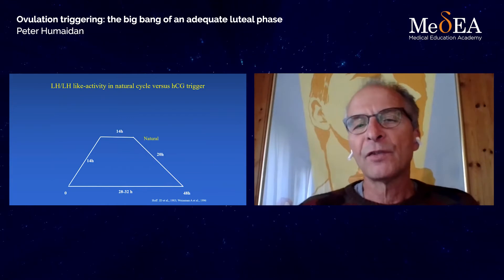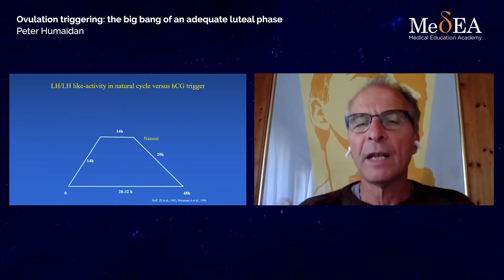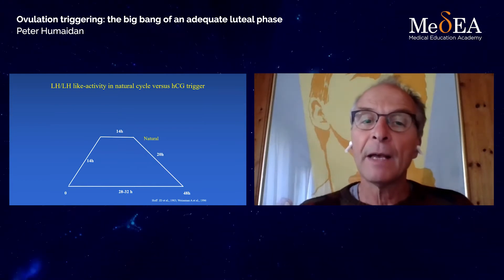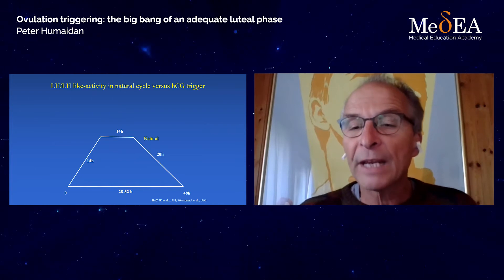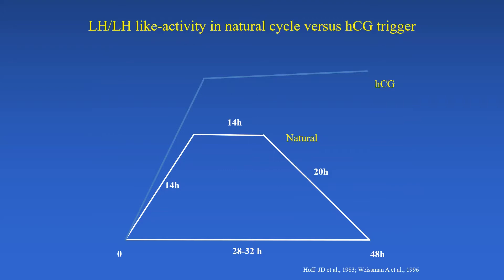The surge of gonadotrophins induced during natural cycle consists of three limbs: an ascending limb, a plateau phase, and a long descending limb. During these 48 hours, FSH and LH are secreted. When we use an HCG trigger, we have this highly supraphysiological LH activity level, which is around for at least six days after the trigger. In contrast, when we use an agonist trigger, the surge has only two limbs: a quick ascending limb of four hours and a long descending limb of 28 to 32 hours. The collective amount of gonadotrophins — LH and FSH secreted — is significantly less compared to the natural cycle.